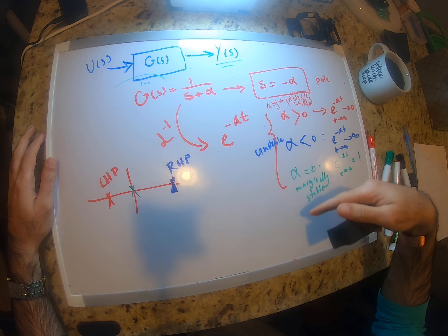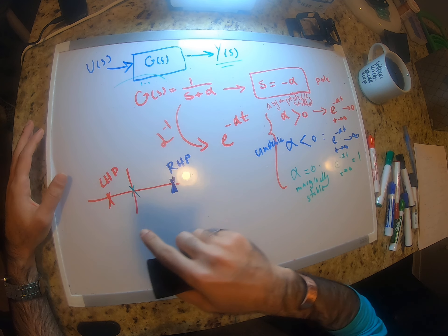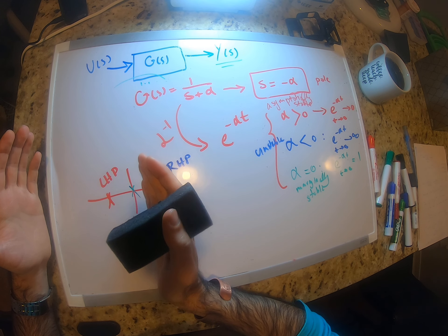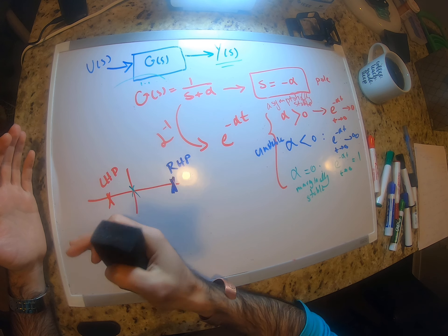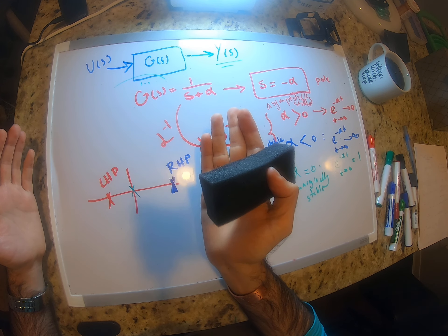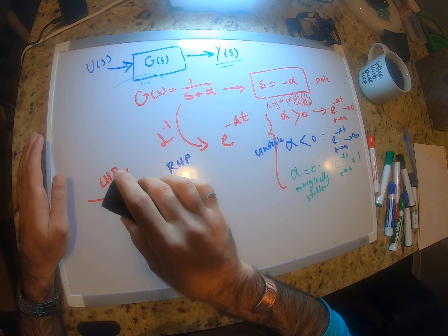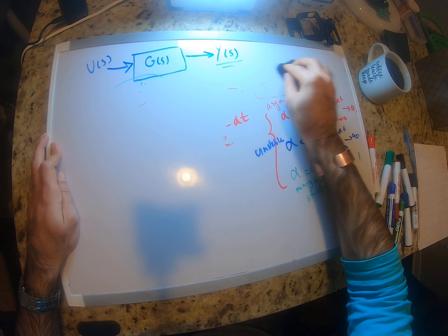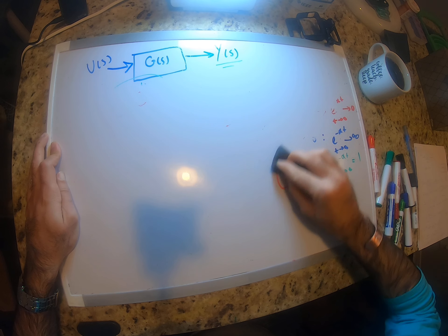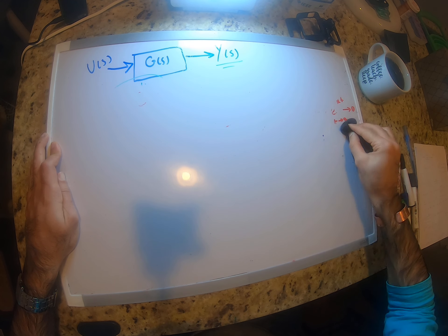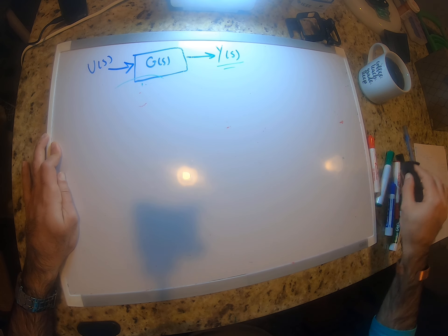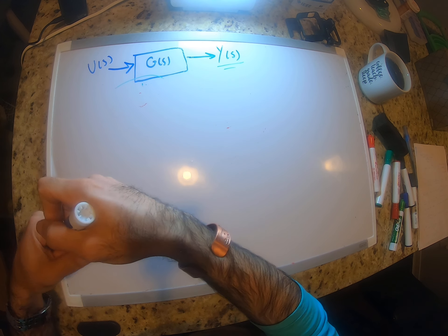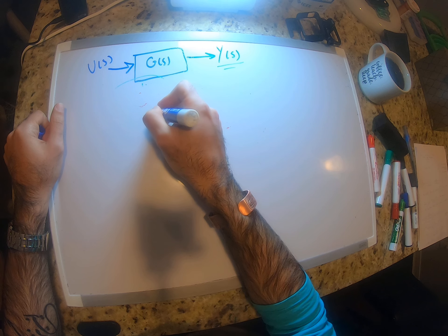This is why we generally want all our poles to be on the left-hand side of the s-plane, so that our response — our system — is stable. As an example, let's look at G(s).